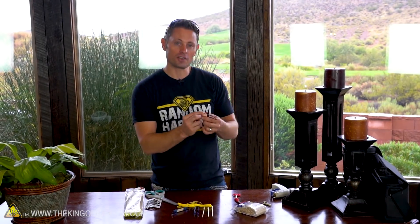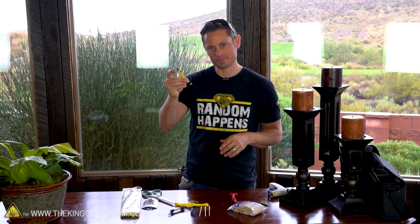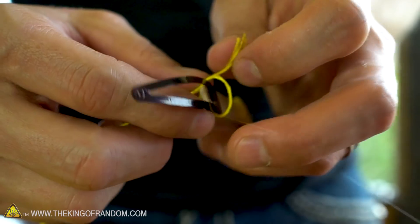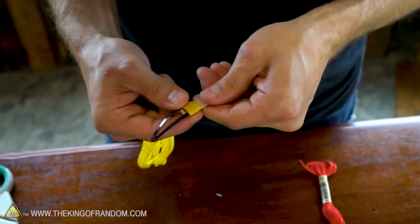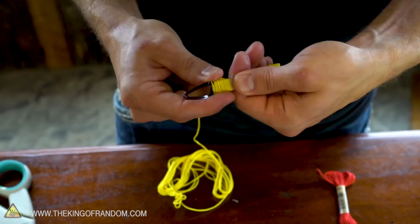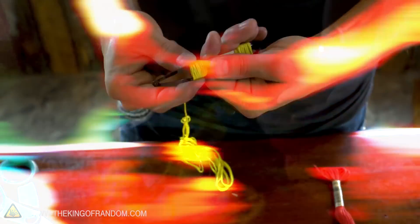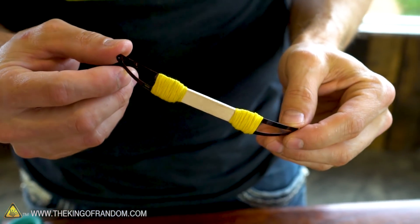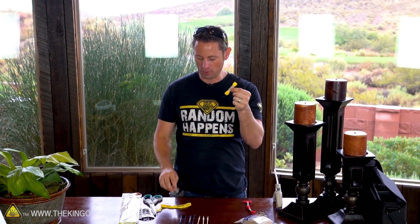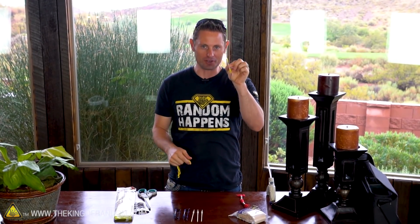All right, with that one done, finishing the other side is just as simple as doing the same thing. So there we have it guys, that pretty much completes all of the lashings for our bow. Now we can use some of the same embroidery thread to create the bowstring.